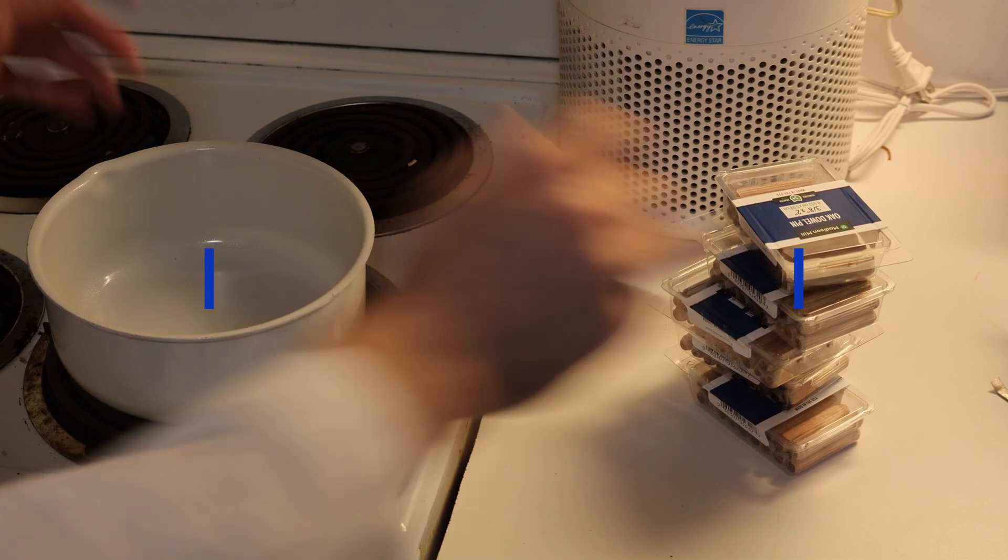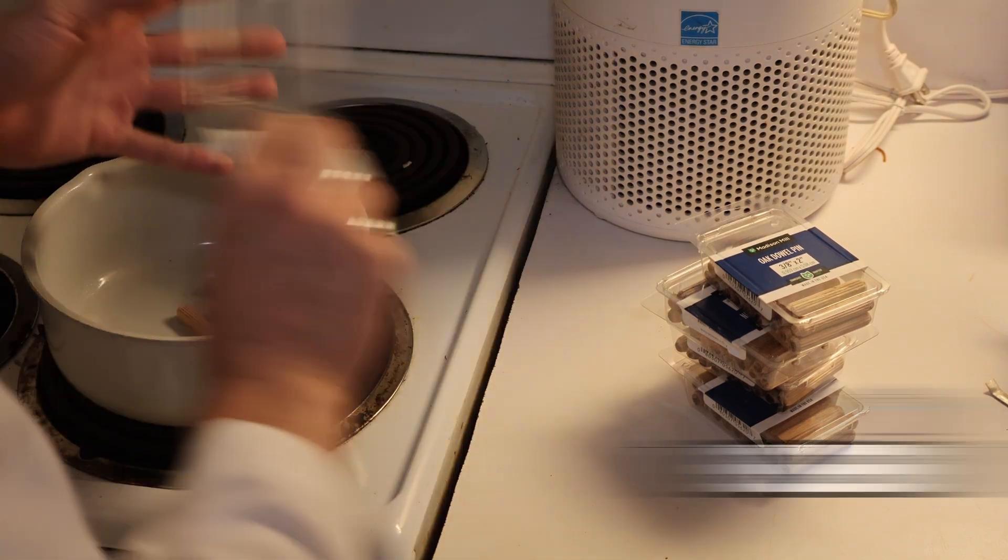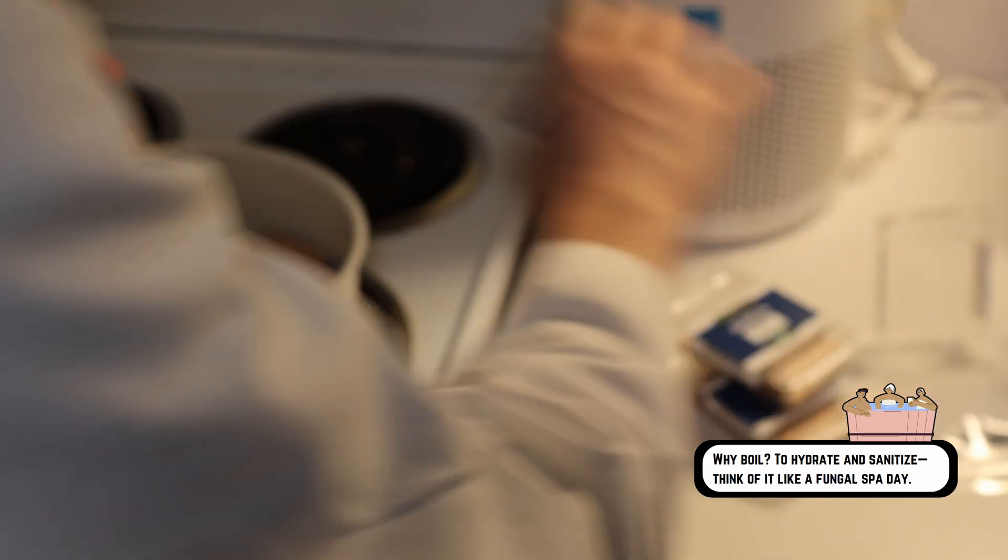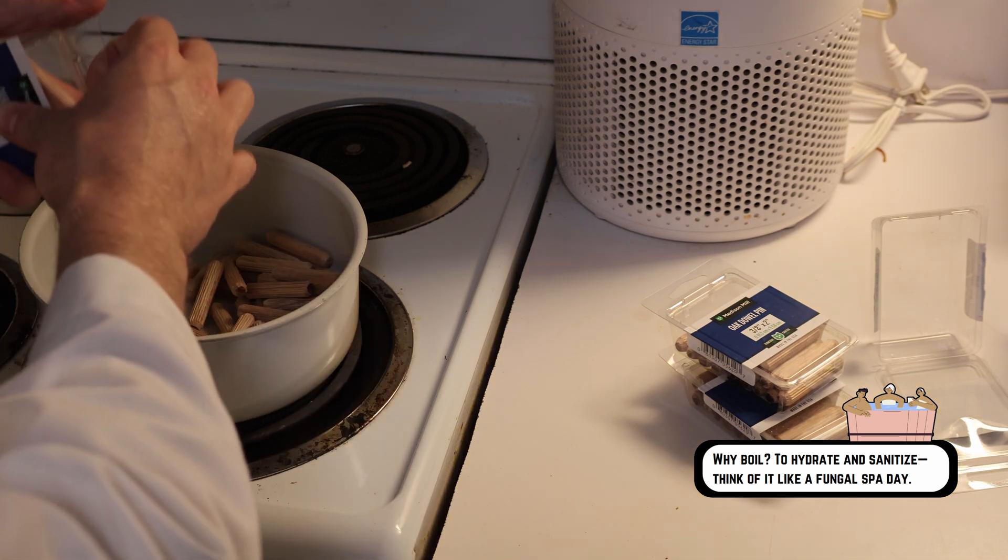This portion is pretty straightforward. All we're going to be doing is boiling and hydrating all of these dowels with some clean water. After they've boiled we'll let them soak for about 24 hours before we go to pressure cook them.